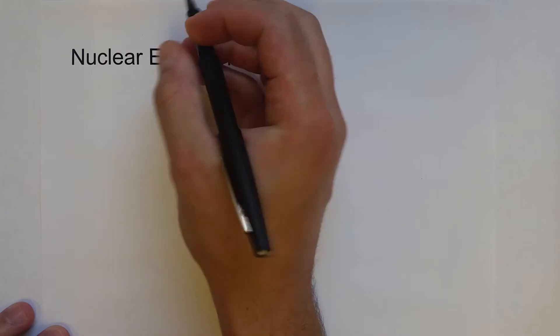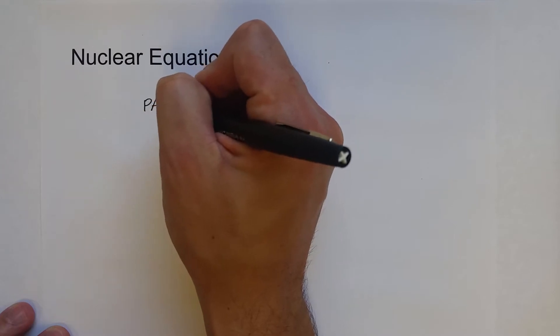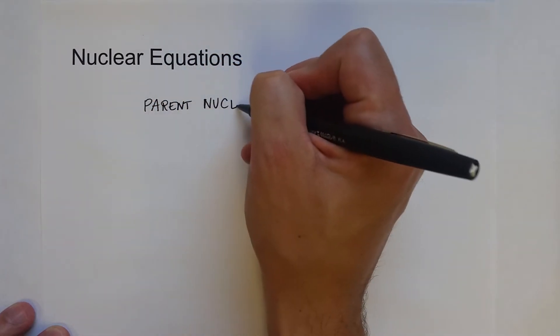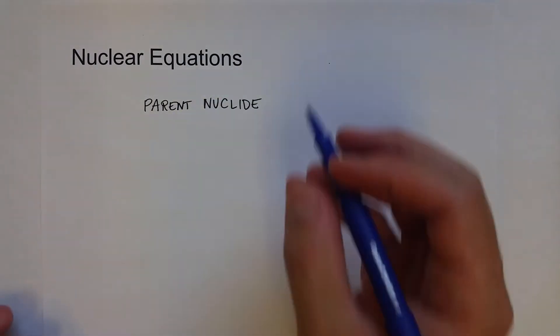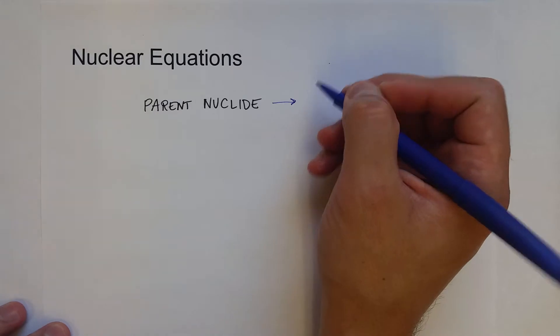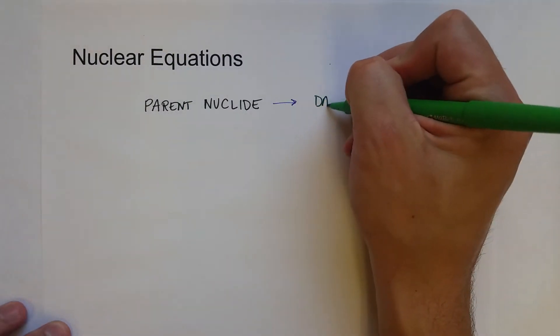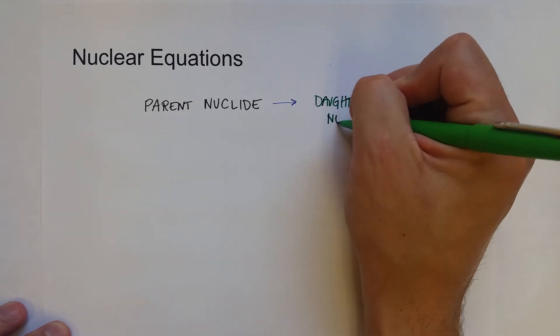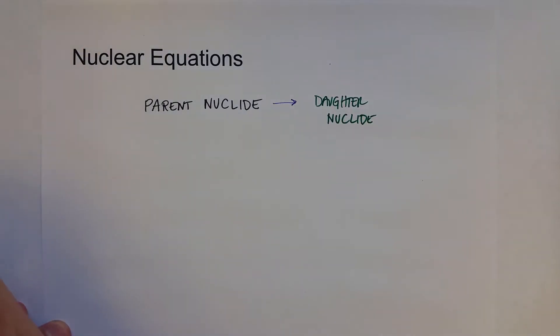What we're going to show is that the radioactive isotope, we're going to call the parent isotope or the parent nuclide, undergoes that nuclear change which means that it is going to react or decay into a new isotope which we call the daughter nuclide. And of course it is going to emit some type of radiation.